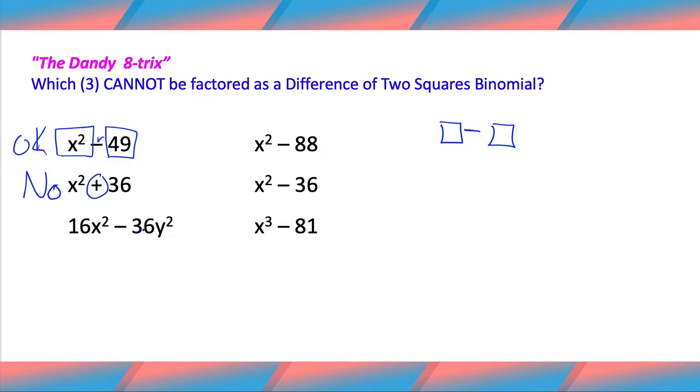16x squared minus 36y squared. Let's see. 16 is a square, x squared is a square, 36 is a square, y squared is a square, and there's a minus in the middle. It meets all the criteria. That one's okay.